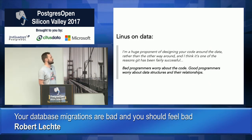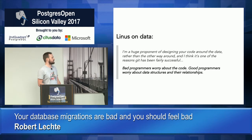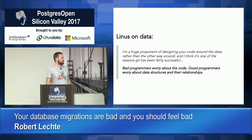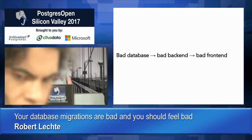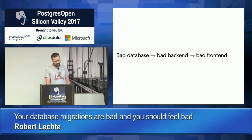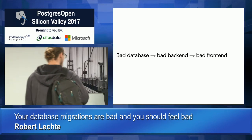This is Linus Torvalds talking about the importance of structuring data correctly. Linus can sometimes be a rude guy and I'm not a fan of his tone, but I'm a big fan of what he's saying here: worrying about data structures and relationships and giving them prime importance over your code is absolutely important. I probably don't need to say this at a database conference, but we all know the importance of getting our data structures right.